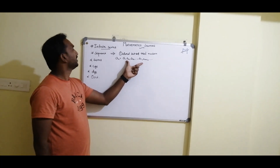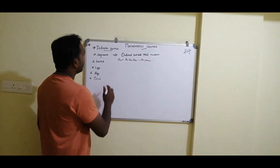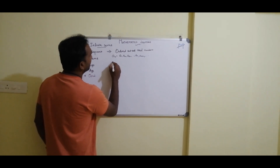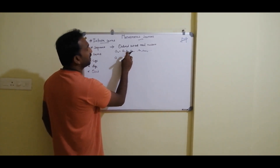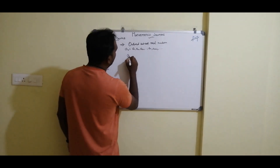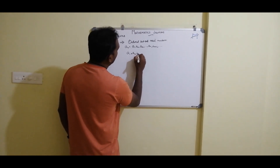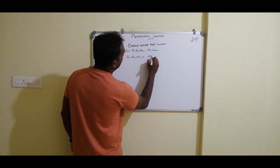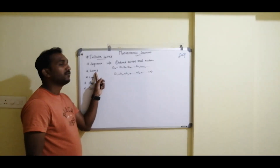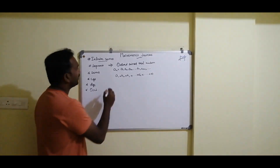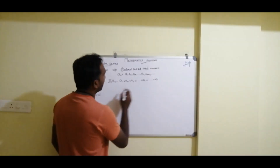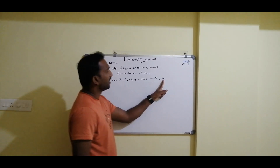What is meant by series of real numbers? The sum of all elements in the sequence is called the series. Consider the infinite sequence {an} = a1, a2, a3, ..., an. Adding all elements gives a1 + a2 + a3 + ... + an + ... up to infinity. This is known as an infinite series, denoted as Σun. If we consider only n terms, it is denoted as Sn.